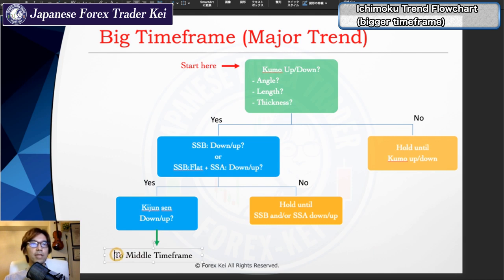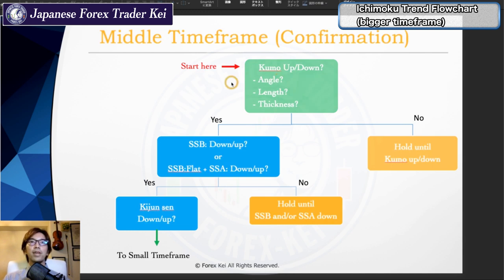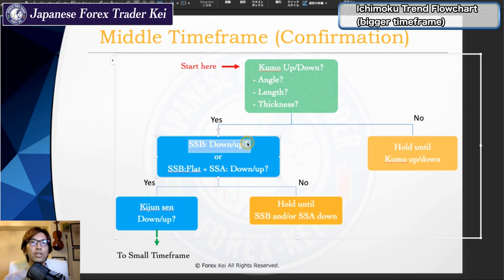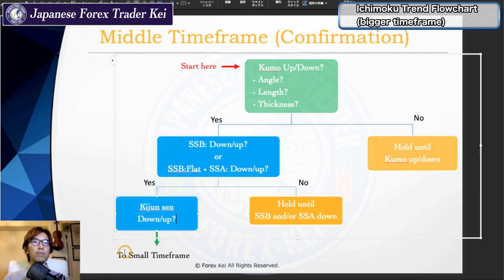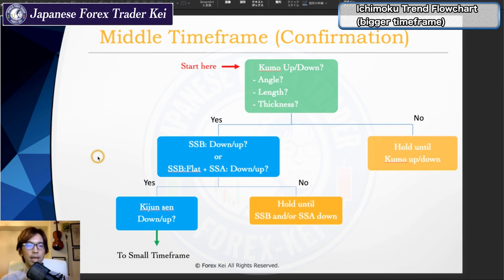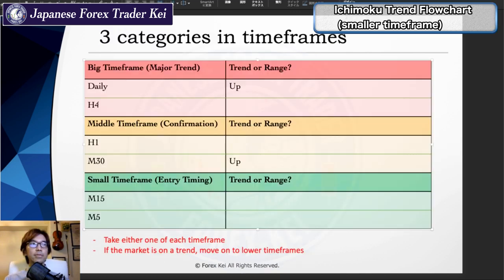Then you move on to the middle time frame, and for the middle time frame it's basically the same. You look at the Kumo direction, angle, length, and thickness. When it's horizontal, hold until the Kumo becomes up or down. When the Kumo is moving up, look at Senkou Span B direction and Senkou Span A direction. When Senkou Span B is flat and Kijunsen is also moving up, move on to the smaller time frame — that currency pair is now qualified to take a trade. Kumo means Senkou Span A and Senkou Span B direction, and you confirm whether it's in an uptrend or downtrend.